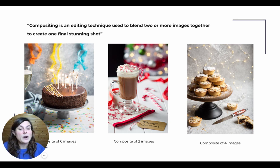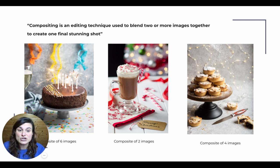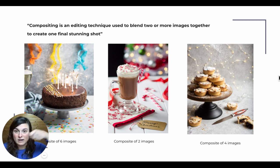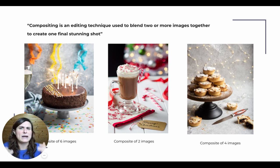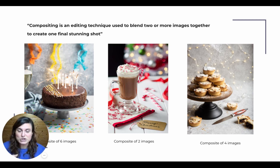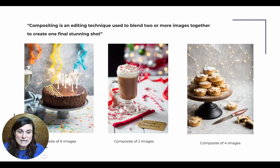And the mince pies here is a composite of four images: one for the blurry fairy light background, another one for the icing sugar coming down, another image for the mince pie — the actual subject — because after getting all of that sugar, they were completely covered in sugar, so I had to grab an image shot previously before all the sugar came down to have the mince pies looking super nice. And a fourth one — I don't really remember — but it's a composite of four images.